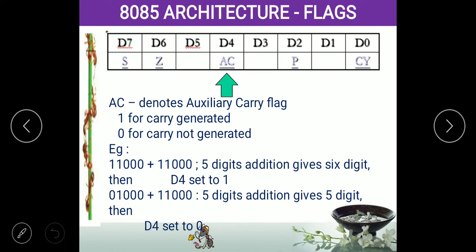If you are adding binary 1 and 1, the answer is 0 with 1 carry — but that carry is not the auxiliary carry. That carry is simply called the carry, denoted at the D0 pin. So that is the difference between carry and auxiliary carry.